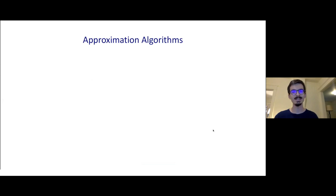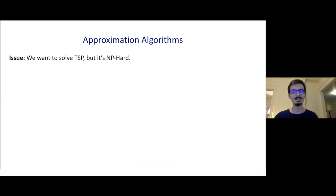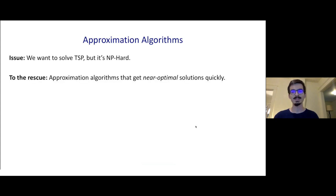Unfortunately, TSP is NP-hard. In many cases, we won't be able to actually find the optimal tour in polynomial time, unless P equals NP. So what do we do when faced with these problems in the real world? One thing you might try is to relax the condition that we get the optimal solution. In the field of approximation algorithms, we do exactly this. We try to design fast algorithms that maybe don't find the optimal solution, but at least get close.